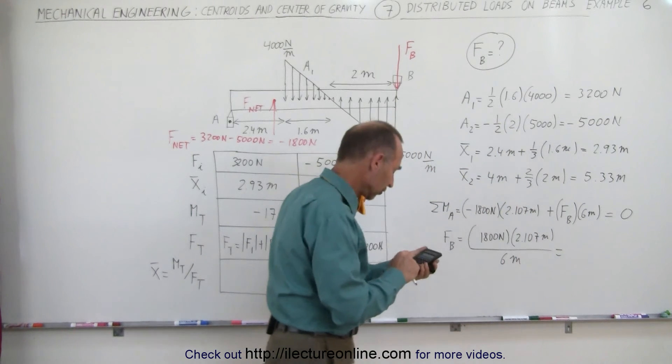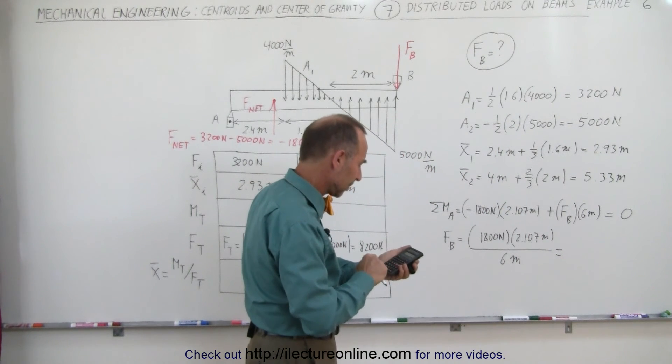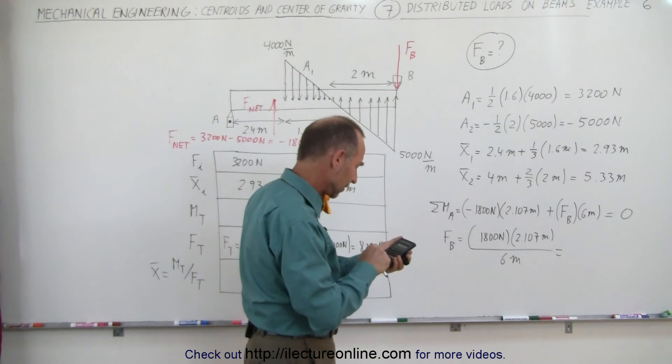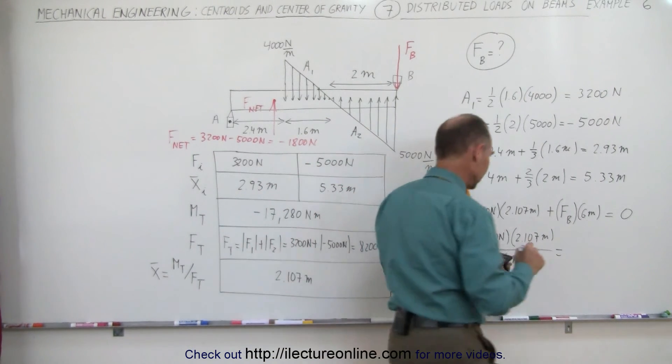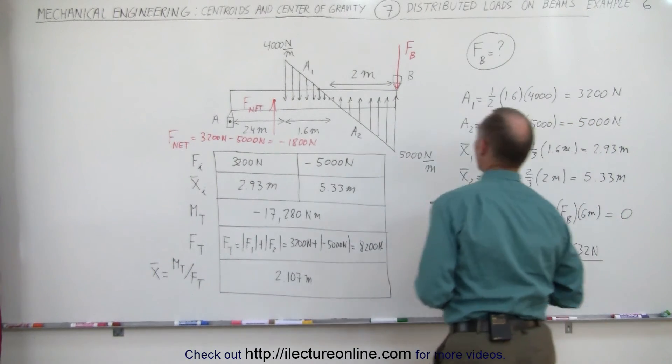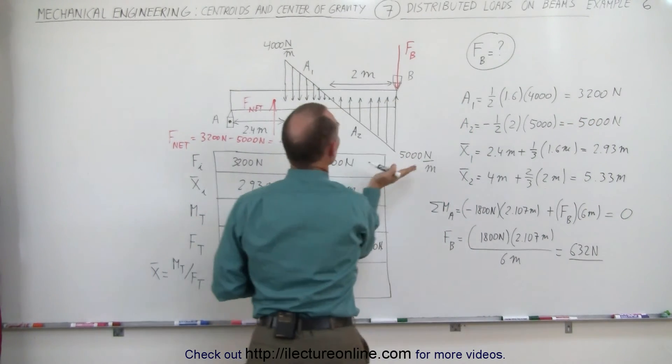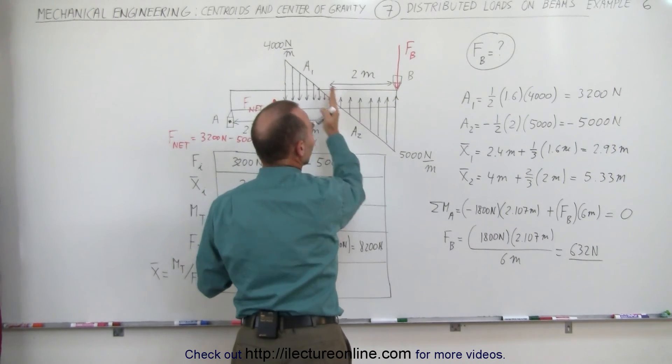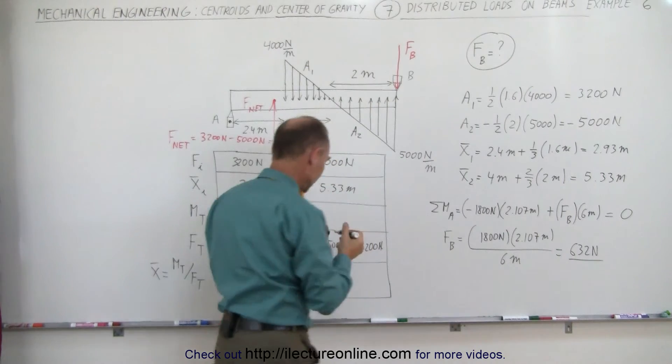And that gives us a total force of 1,800 times 2.107 divided by 6 equals 632 newtons. That's the reaction force at B, keeping the beam from tipping over in this direction, caused by this additional force pushing down at the bottom of the beam.